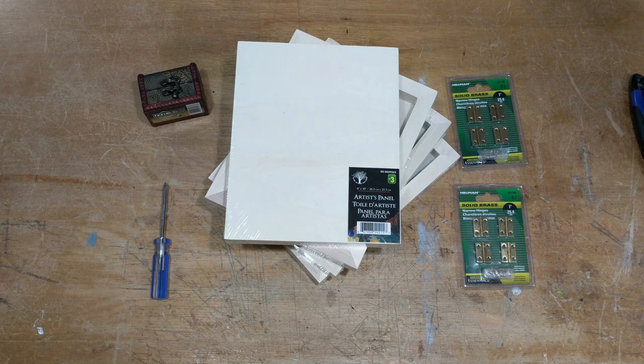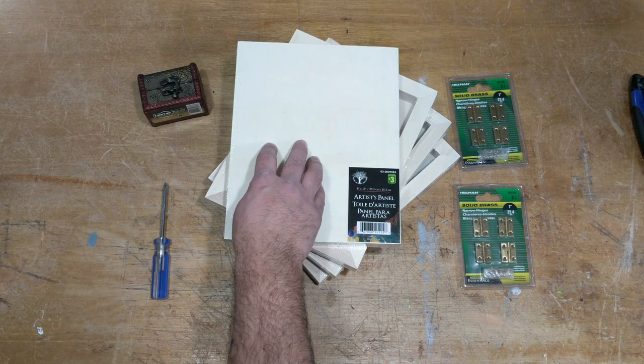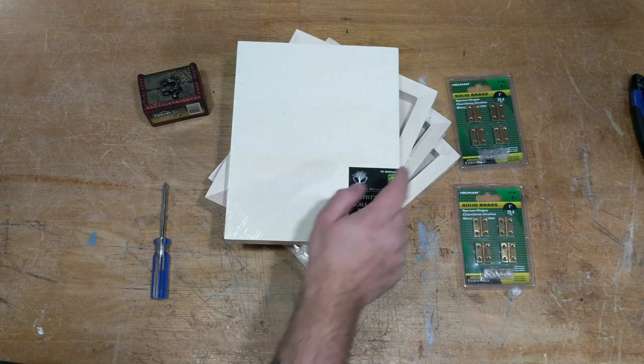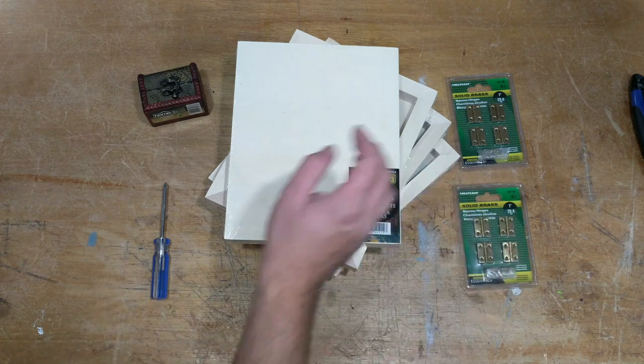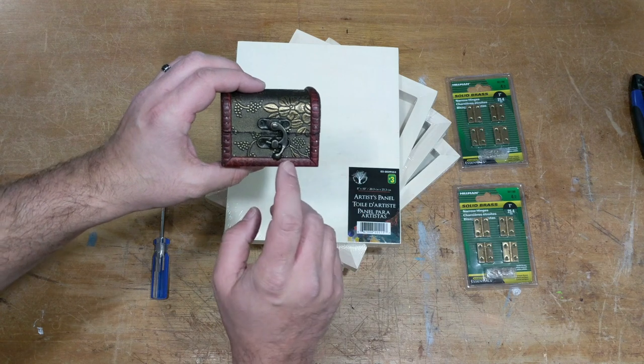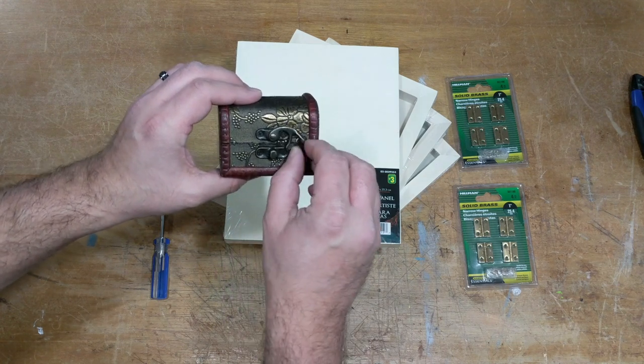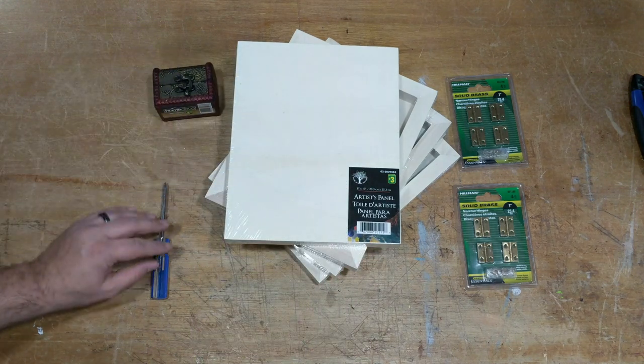So here's everything we're going to need for today's build. I have four of these dollar store artist panels, some hinges, this little box I'm using just to salvage this little latch, and a screwdriver.